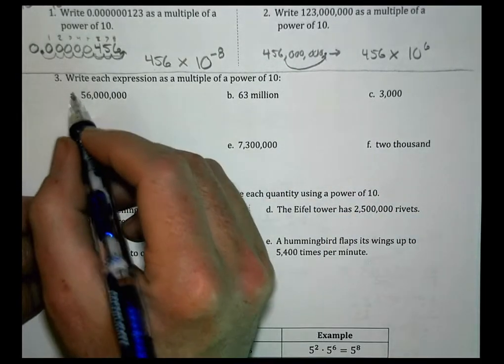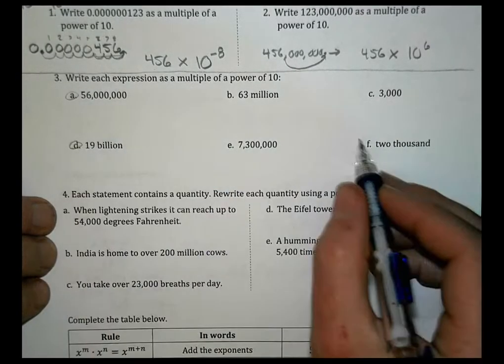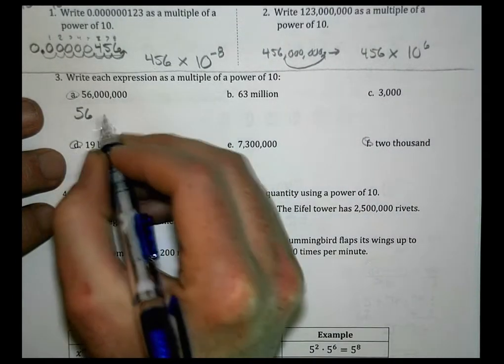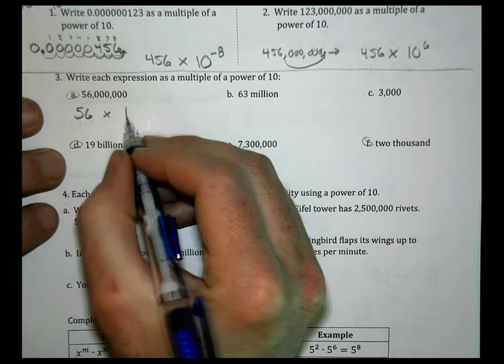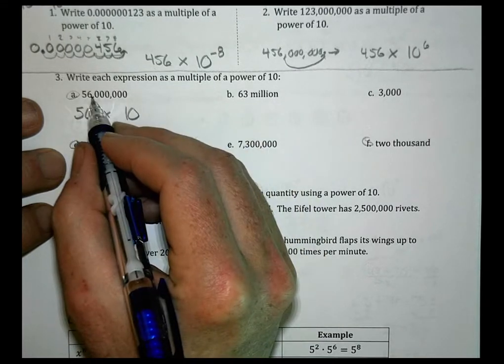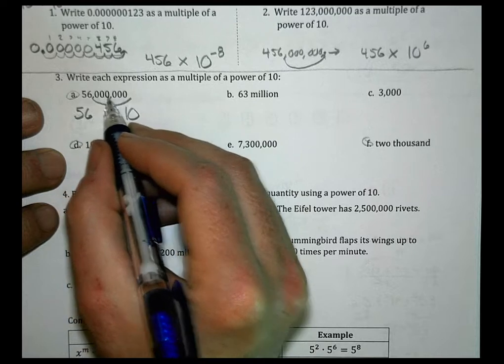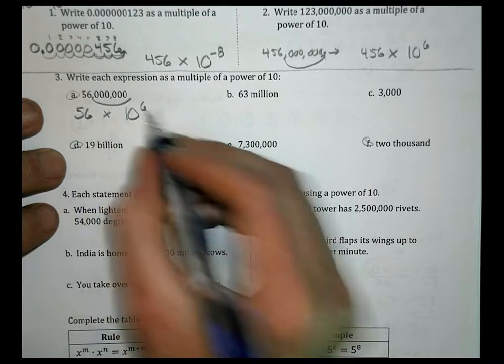Number 3, I'm going to do A, D, and F. The first one, we have 56 million. We multiply it by 10 to how many place values from here to here? There are a total of 1, 2, 3, 4, 5, 6. So we say 10 to the 6th power.